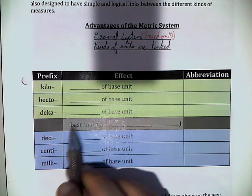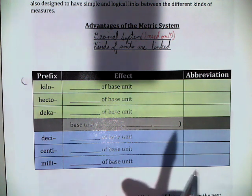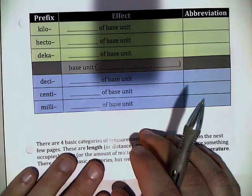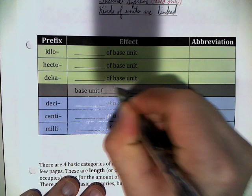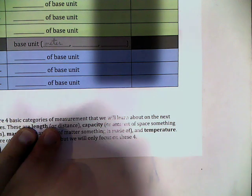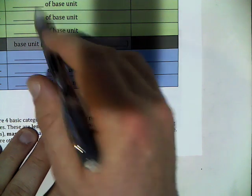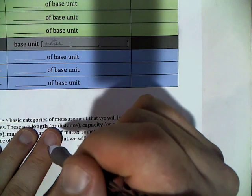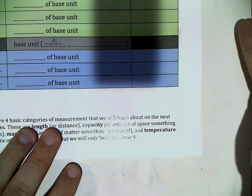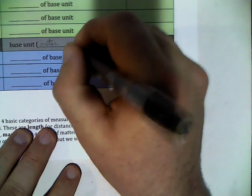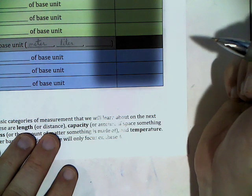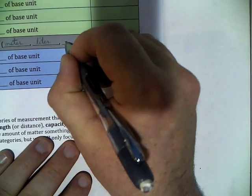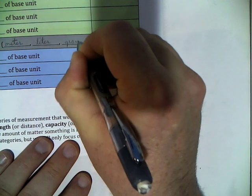Let's go to the base unit. In each of our categories we're going to have a base unit. For example, length — the base unit of length is a meter. In the metric system, everything else is going to be some adjustment on a meter: some prefix, then meter. If we're talking about capacity, the base unit will be a liter. And if we're talking about mass, the base unit is a gram.